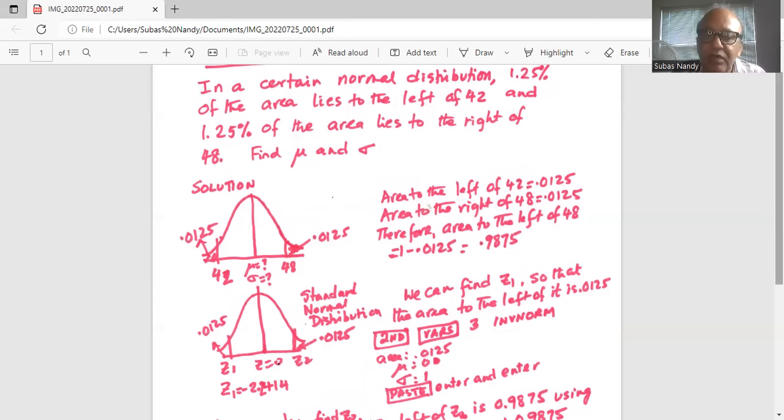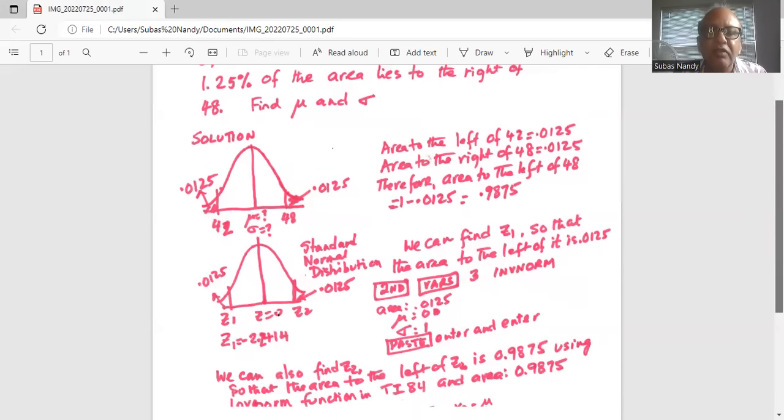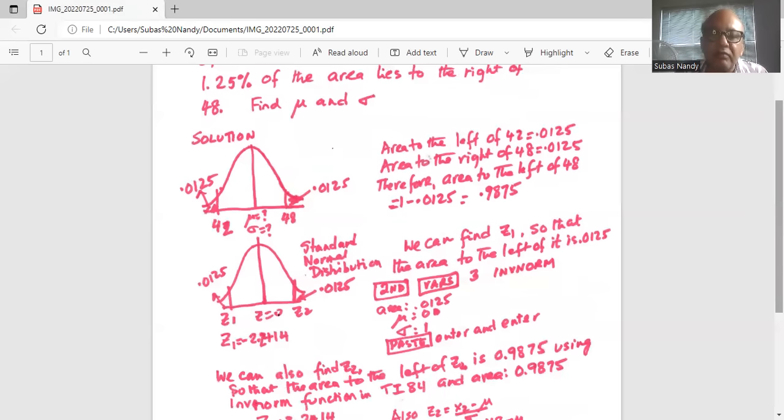Area to the left of Z1 is 0.0125, because it's a standard normal curve, mu is 0, sigma is 1. Then we go down to paste, enter and enter. And Z1 is calculated as minus 2.2414. Negative because it's on the left of 0.